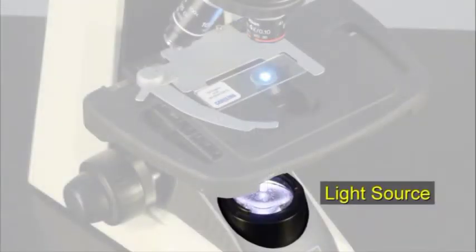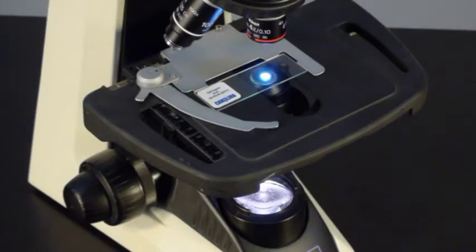The light source mounted below the mechanical stage directs light from the lamp up through the iris diaphragm, condenser, and slide into the objective lens. Three adjustments control slide illumination.